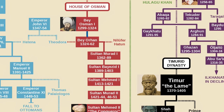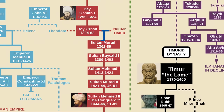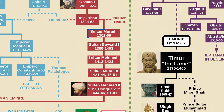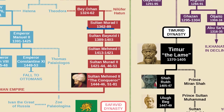Osman was called Atman by the Greeks and it's from that version of his name that we get the word Ottoman. The start of the dynasty is usually put at 1299. Osman was succeeded by his son Orhan who expanded the realm further. He married a Byzantine princess, Theodora, with whom he had a son who's not on this chart — that son married another Byzantine princess. Orhan conquered Gallipoli and put the first Ottoman footprint in Europe. His son, Murad I, expanded the young Sultanate further into Europe.